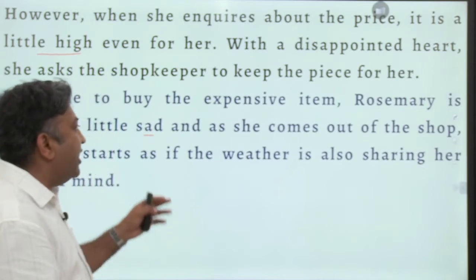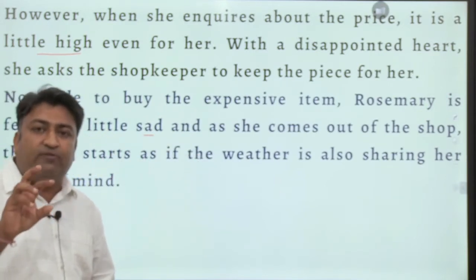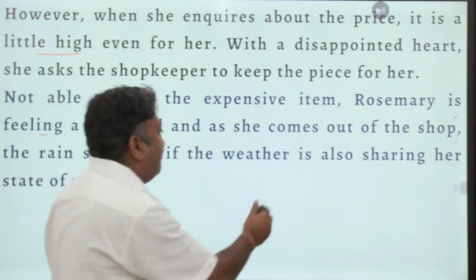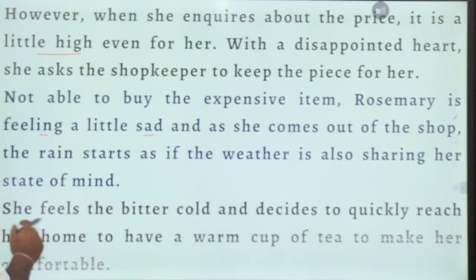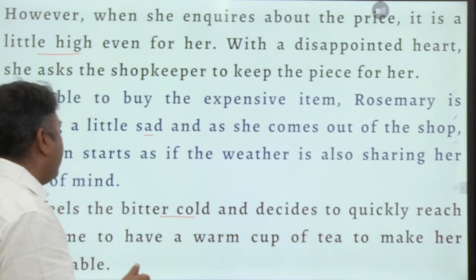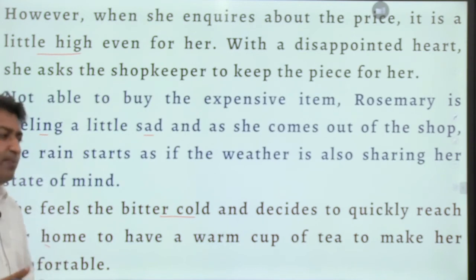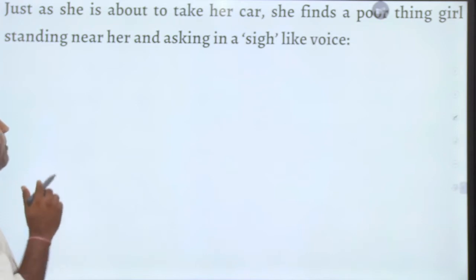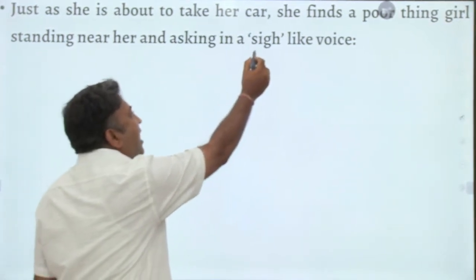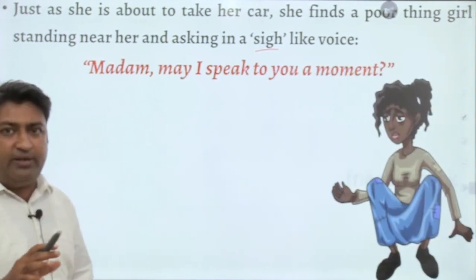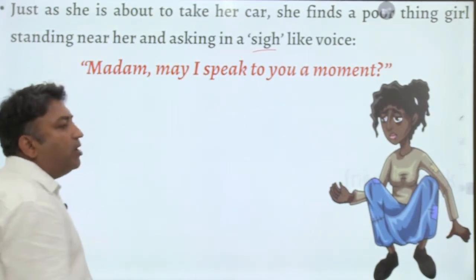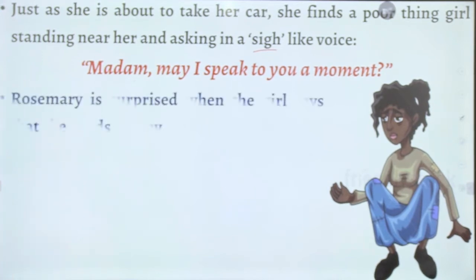Not able to buy the expensive item, Rosemary is feeling a little sad — one of those rare times she cannot purchase what she wants. She comes out of the shop and rain starts. This is a psychological trick by the writer: the atmosphere mirrors her heart, and the weather shares her state of mind. She feels the bitter cold and decides to quickly reach home for a warm cup of tea. Just as she is about to take her car, she finds a poor girl standing near her, asking to speak to her.